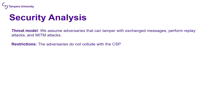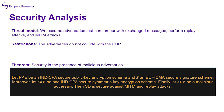Concerning the security analysis, for our threat model we assume that adversaries can tamper with exchanged messages, perform replay attacks and man-in-the-middle attacks. The only restriction is that adversaries do not collude with the CSP — a valid assumption since collusion would require security in a scenario where all secret keys are known. Based on this threat model, in our paper we formally prove that if the encryption schemes and the signature schemes satisfy some basic security notions, then our construction is secure against man-in-the-middle attacks, replay attacks, and tampering with exchanged messages.